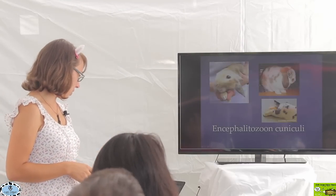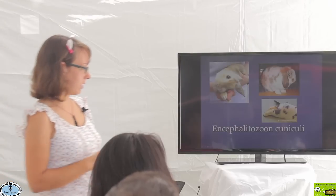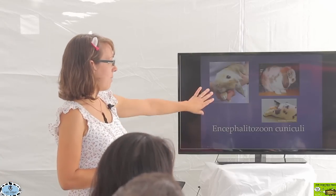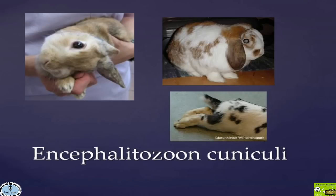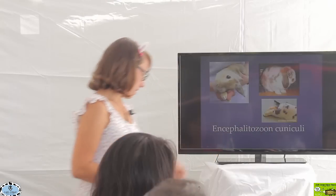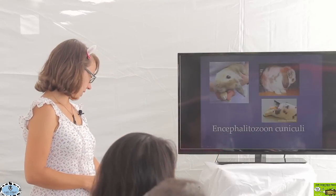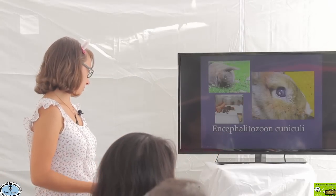Here are a few pictures to represent E. cuniculi signs. A rabbit with a head tilt. This rabbit up here, you can see the eye, how the normal black portion of the eye, that pupil should be nice and black. His is white because he has a cataract. And then the rabbit at the bottom with hind end paresis. He's not able to use those hind limbs as he once was.